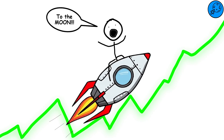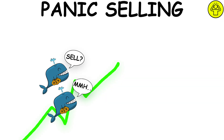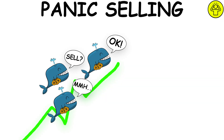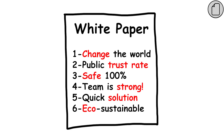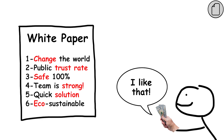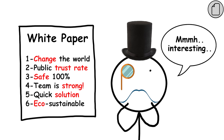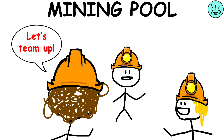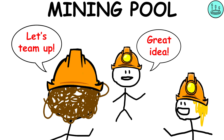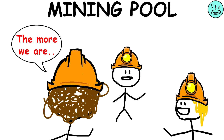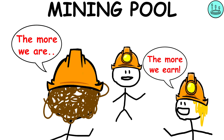To the moon: it is slang for crypto rising in price stratospherically, often quickly. Panic selling: when a large number of investors want to sell their holdings at the same time, and it creates a drop in prices. White paper: it summarizes in a single document important information related to a blockchain project or cryptocurrency. New projects will launch white papers to help potential users or investors understand the product or service. Mining pool: it is created when individual cryptocurrency miners team up and pool their resources to increase their chances of getting a block reward. Rewards for solving blocks are paid based on the processing power of those who contributed to the pool.